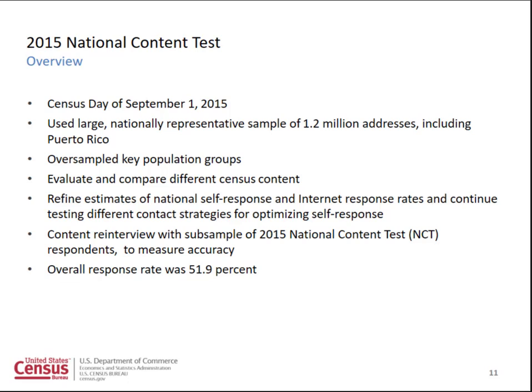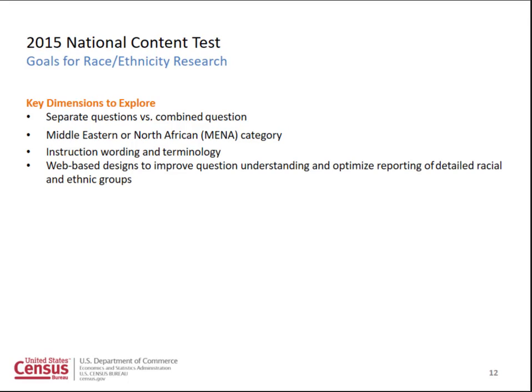Let me tell you a bit about the 2015 National Content Test. It had a census day of September 1st, 2015, a large nationally representative sample of 1.2 million households, and we oversampled for Asians, Pacific Islanders, Middle Eastern and North Africans, Blacks, Hispanics, and American Indian and Alaska Natives. We really tested the content areas for the 2020 census, including race and ethnicity, and also relationship. We also had a re-interview component — we went out to about 75,000 households and re-interviewed them. The response rate was 51.9 percent.